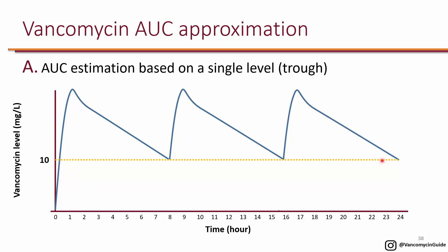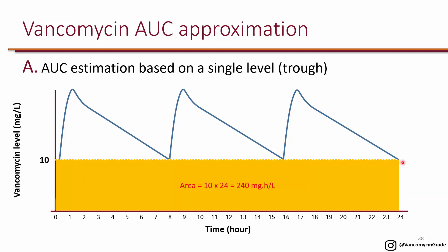Because the AUC is the area under the curve, if you have a trough of 10, you can say that the level never goes below 10. So you can say the area under the curve is at least 10 times 24, which is 240. This area is at least 240, and then you also have all the areas at the top which we don't know because we don't know what the peak is. That's the issue when you only get a trough — you don't really know what the true peak is, so it only allows you to estimate what the AUC is.